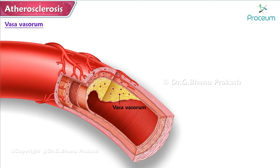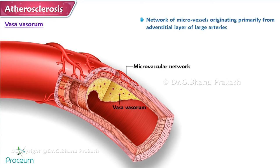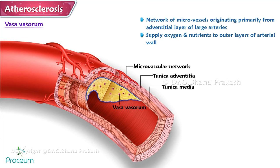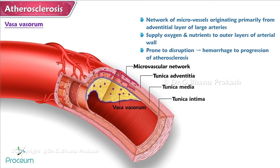The vasa vasorum forms a network of micro-vessels that originates primarily from the adventitial layer of large arteries, supplying oxygen and nutrients to the outer layers of the arterial wall. As atherosclerotic plaques develop and expand, they acquire their own microvascular network extending from the adventitia through the media and into the thickened intima. These thin-walled vessels are prone to disruption, leading to hemorrhage within the plaque and contributing to the progression of atherosclerosis.